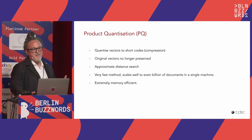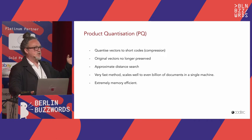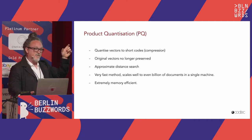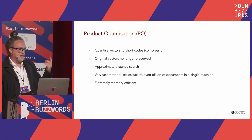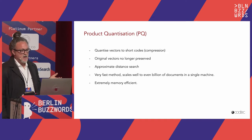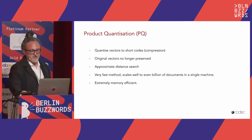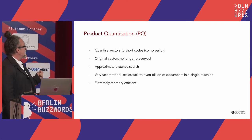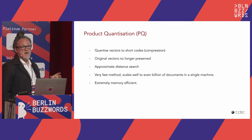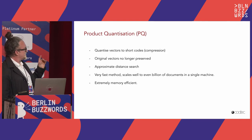Product quantization is essentially a compression method. You define a codebook and map your vector to a short sequence of symbols — a compressed form. The original vector is not stored, which can be an issue, though you can additionally store it if needed. The approximate distances are then computed from this compressed representation. The nice thing is it's a very fast method and scales well to billions of documents on a single machine, especially when memory is limited — it is extremely memory efficient.